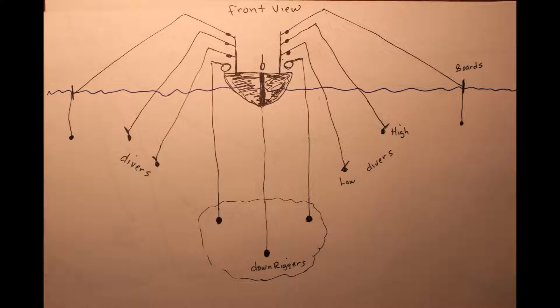You probably wouldn't have a center rigger unless you had an inboard, but this is what most big boats use for trolling. So you got your three down riggers, you got two low divers, two high divers, one on each side and then you would have boards on top of that to the outside.